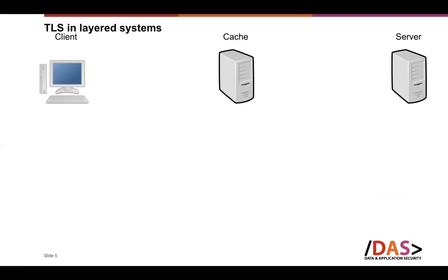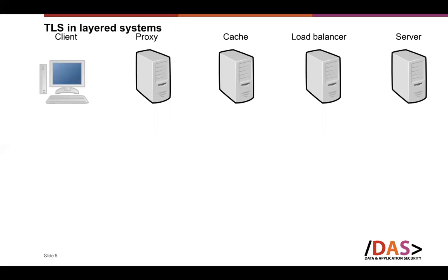In modern distributed systems, we have caches and many other intermediate systems providing scalability — for example, a load balancer for scalability, a proxy for business logic. In such a layered system, if we want TLS, we face the problem that messages are only protected during transport. If a message is inside one of these intermediate systems, it is not protected.